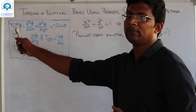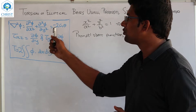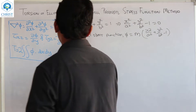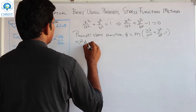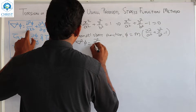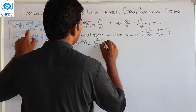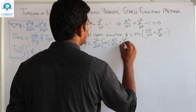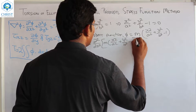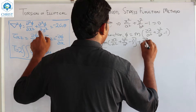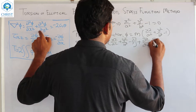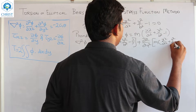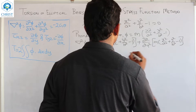Now let us substitute this expression into del²φ = -2Gθ. So del²φ is equal to ∂²/∂x² of φ, which is m times (x²/a² + y²/b² - 1), plus ∂²/∂y² of m times (x²/a² + y²/b² - 1).